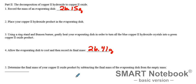Now my job is to figure out how much copper II oxide is actually in this dish. I'm going to take that 26.41 grams and subtract the empty dish mass of 26.15 grams. That gives me 0.26 grams of copper II oxide that is produced.